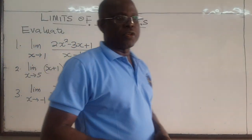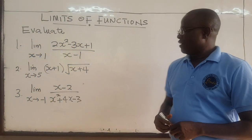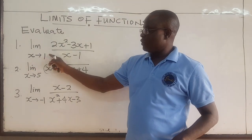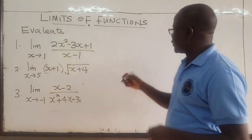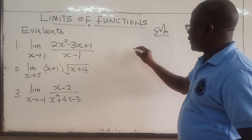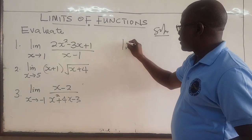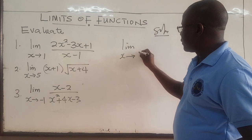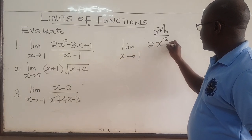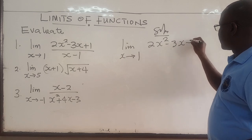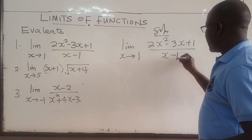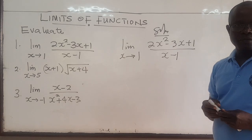Hello guys, so we're going to do another set of examples for finding the limit as x approaches some number. In the first one, we want to find the limit as x approaches 1 for 2x squared minus 3x plus 1, all over x minus 1.